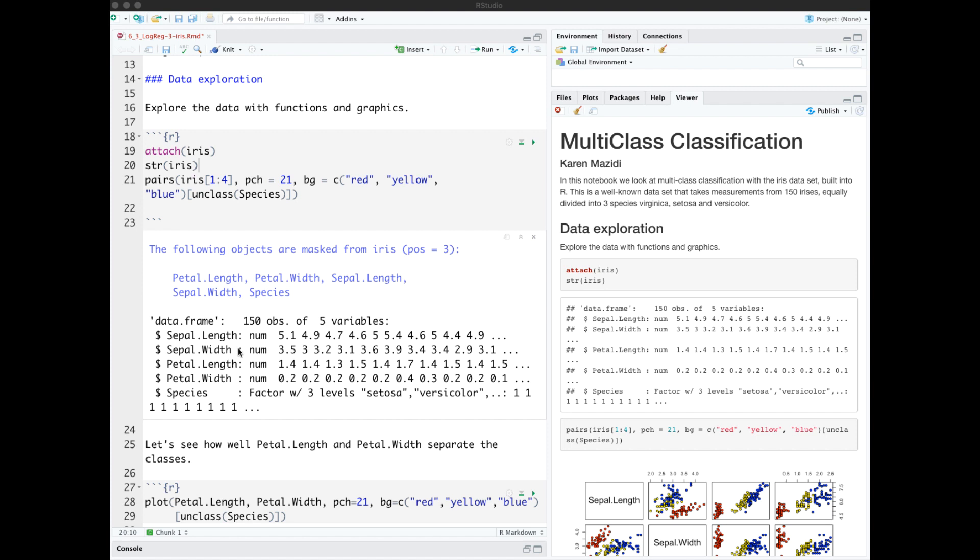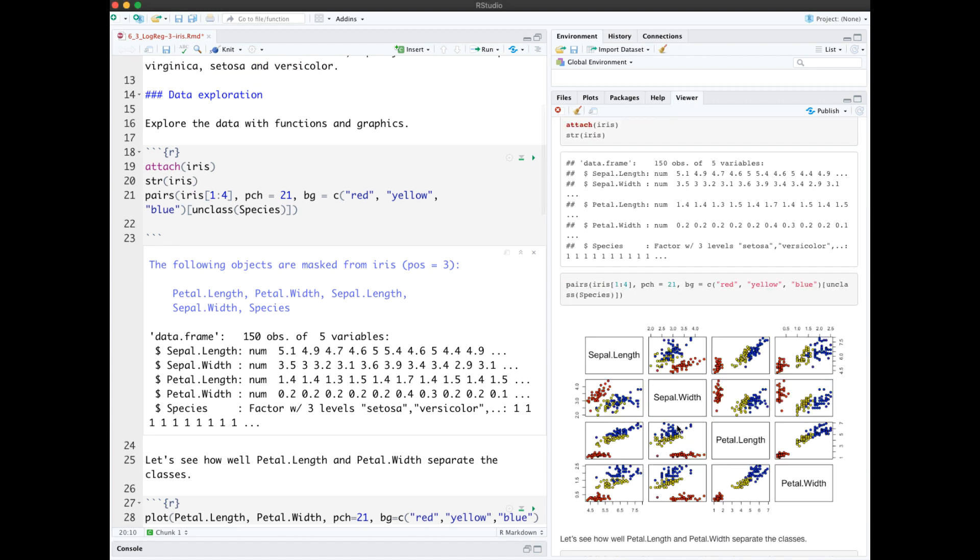It has four predictors which are sepal length and width and petal length and width. Here I'm showing pairs with the four predictors. We see here a lot of correlation between petal width and petal length, and less so between sepal width and sepal length.